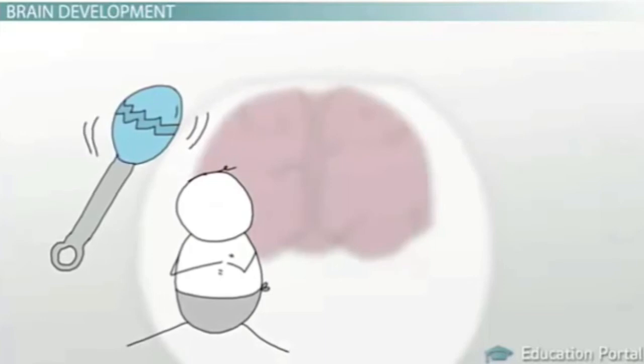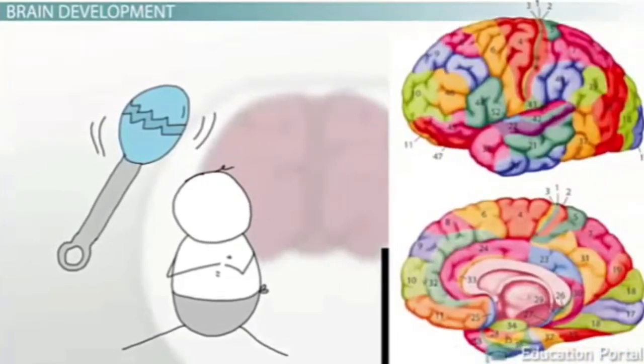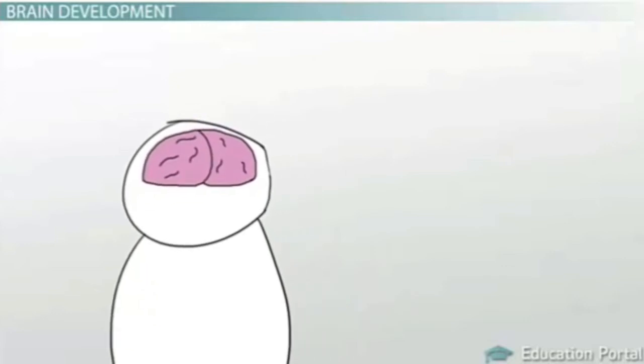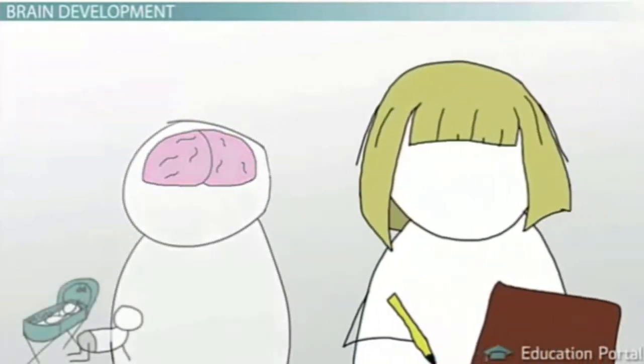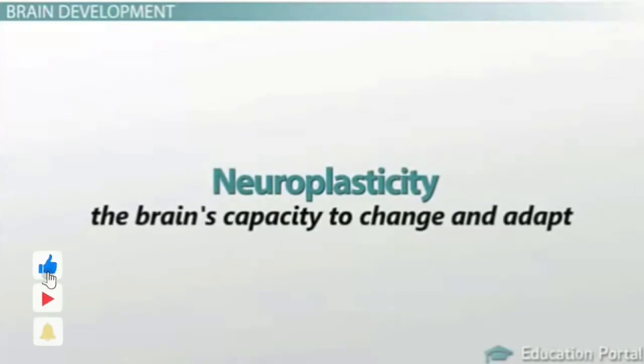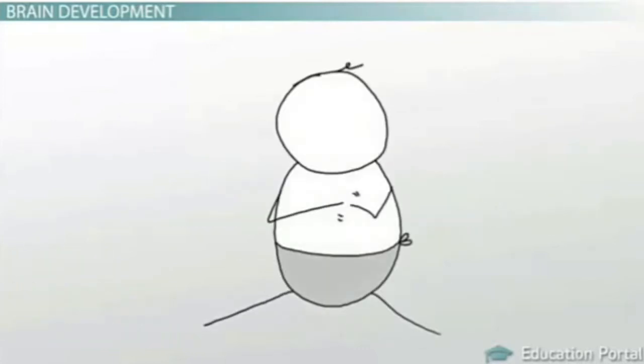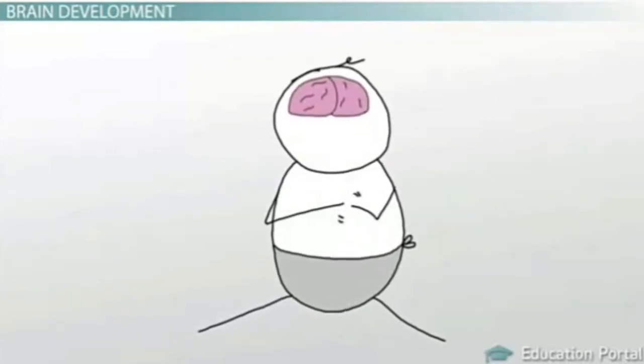Many people imagine that brain development only involves the brain getting larger. While the brain does get somewhat bigger in the first two years of life, the more dramatic changes don't involve growth in physical size but in functionality. Neuroplasticity, or the brain's capacity to change and adapt, is incredibly high in infancy. As a result, a baby's brain learns new ways to work and function.